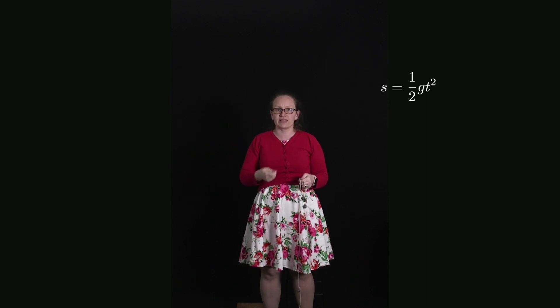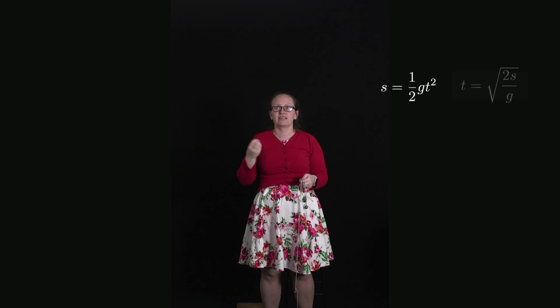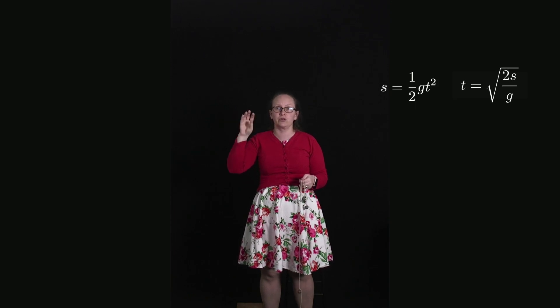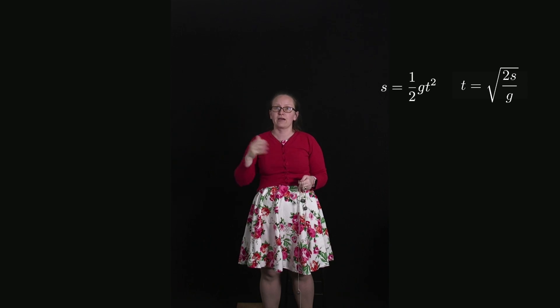We can rearrange this and see that the time it takes for the mass to fall is given by the square root of 2sg, where s is the total distance covered by the mass.